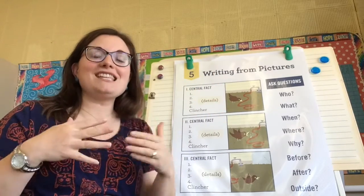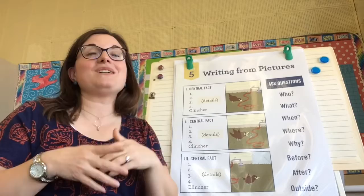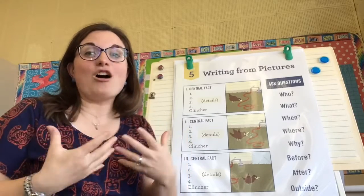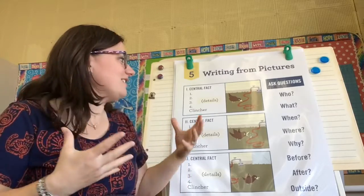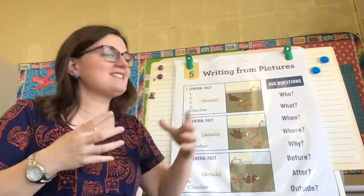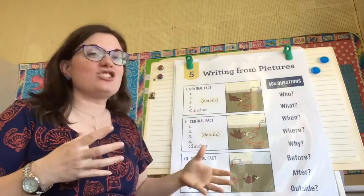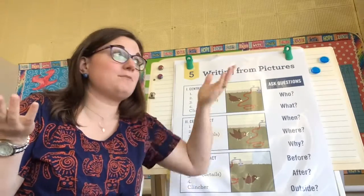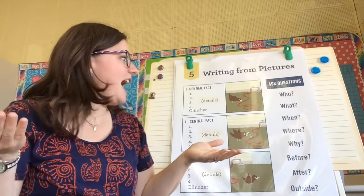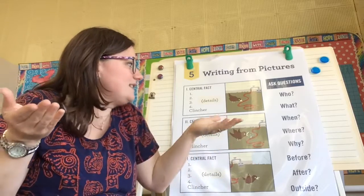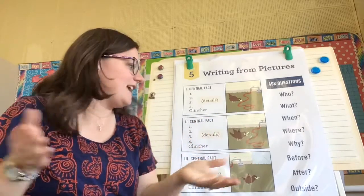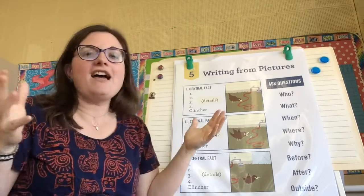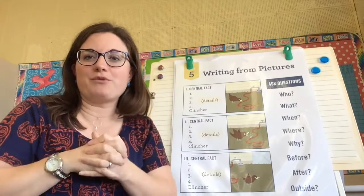I want you to almost pretend that you're a reporter. A reporter goes to, say, an accident or something exciting that happened, and they see what's there and then put the pieces of the story together. We're going to have three pictures and ask ourselves some questions to help decide how we're going to tell the story. Just like in unit three, you can add names, all of the details — what happened before, what's going to happen after, who is that, what is it, where are they, and why.